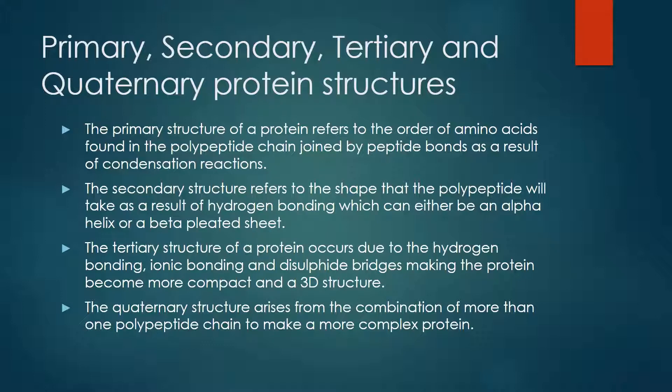The secondary structure of a protein refers to the shape that the polypeptide will take as a result of hydrogen bonding, which can either form an alpha helix or a beta pleated sheet.